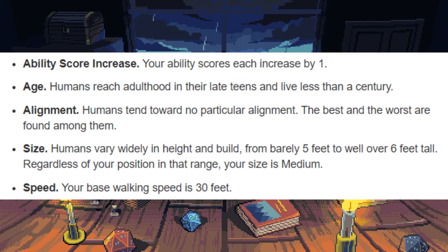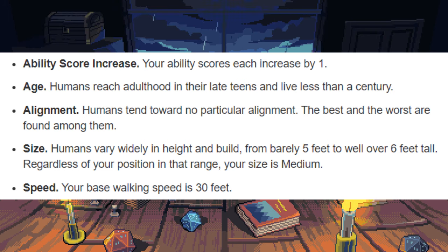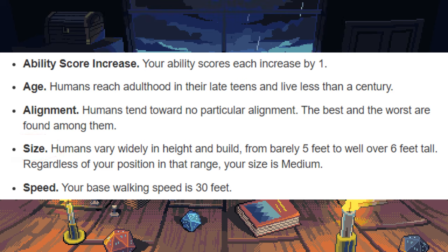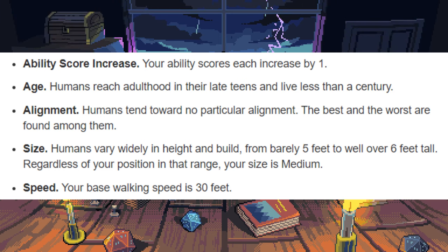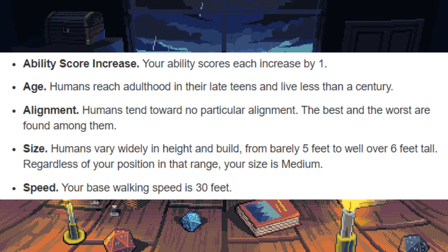After ability score increases, we have age, which can vary a lot — from Kenku to elves, which can live between around 20 years and almost a thousand years. Age isn't really a big factor in D&D unless you are extremely young or extremely old, so maybe just try not to be a 900-year-old elf at the start of a campaign when you're just starting off at level 3. After age is your size — for the most part, every member of a single race will be around the same size, and that is going to be medium.